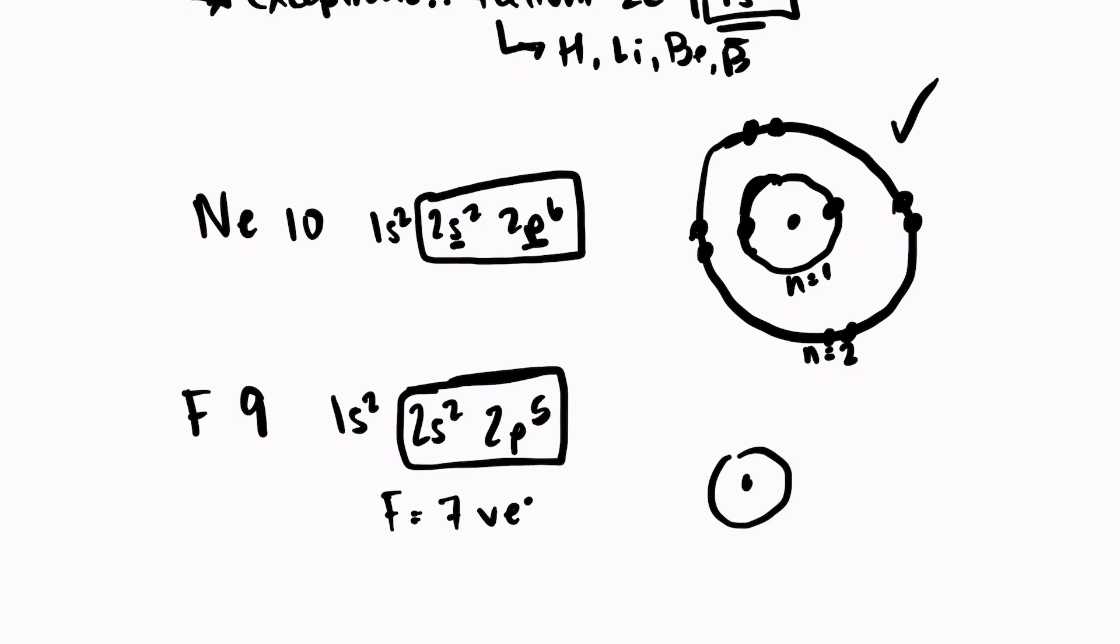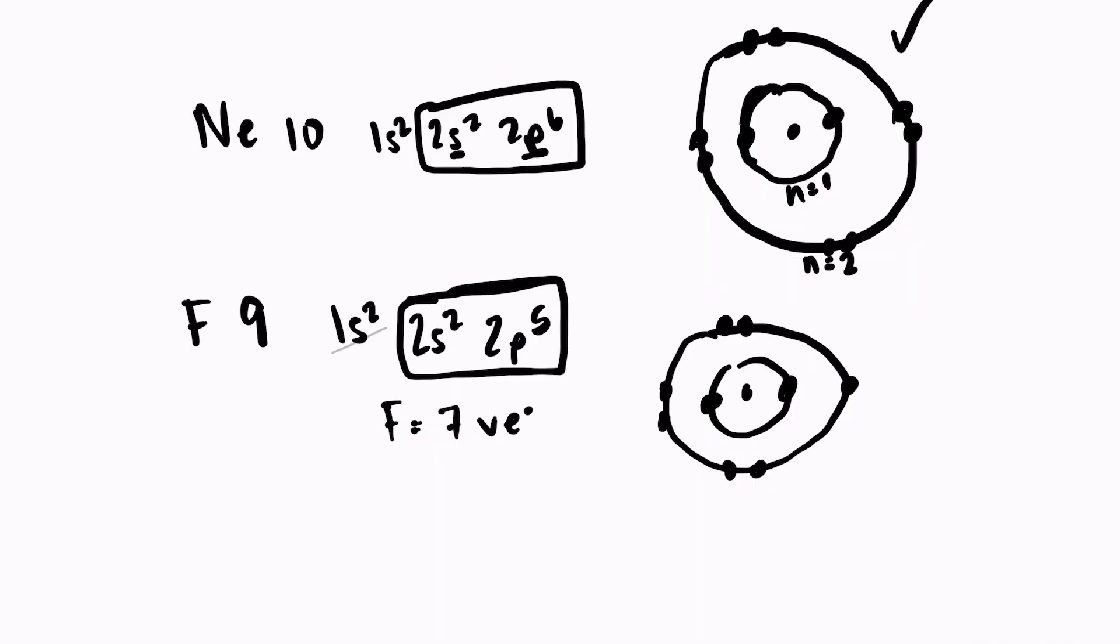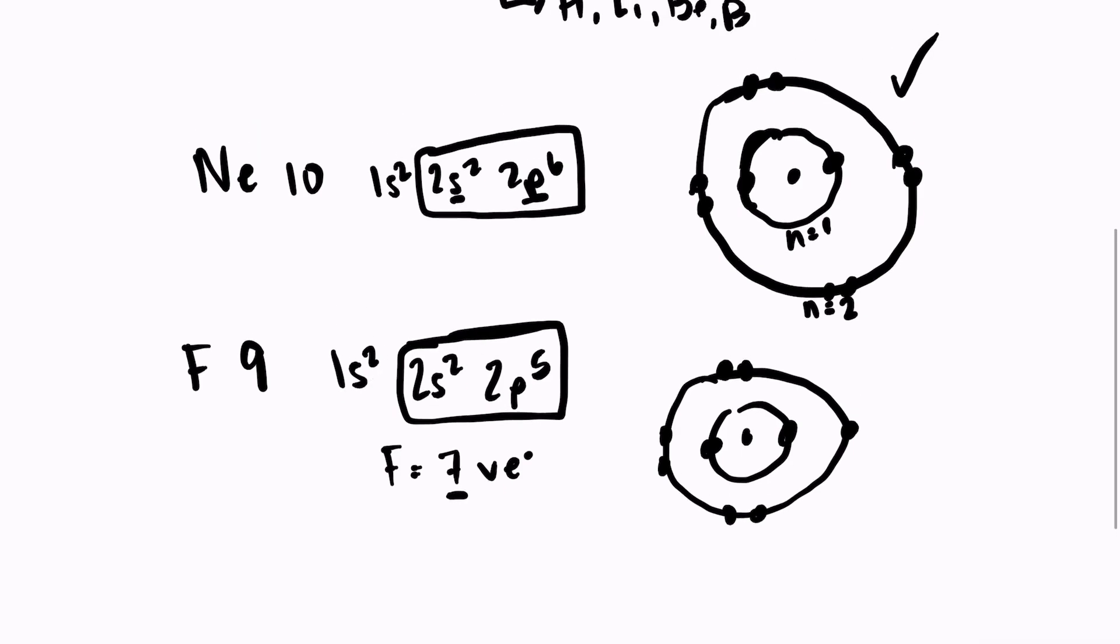If we were to look at a model of the fluorine atom, we would see that it is super close to neon, but it's missing one valence electron. So fluorine will actually bond in such a way that it will gain that one valence electron to become stable like neon.